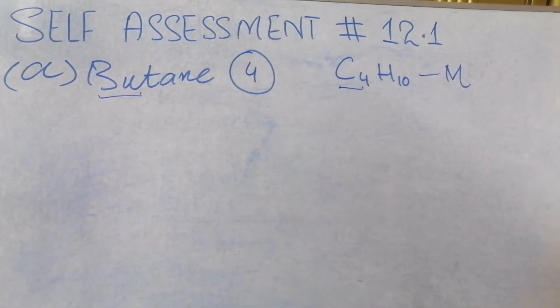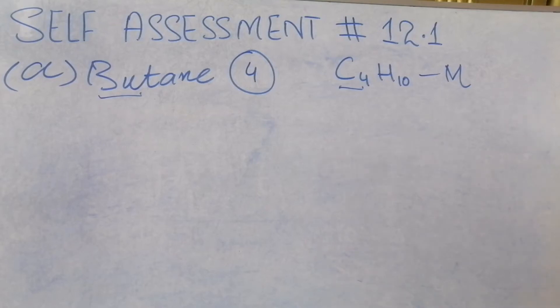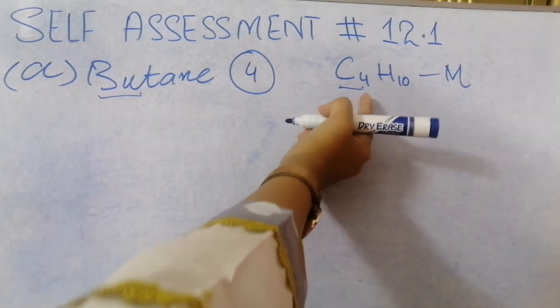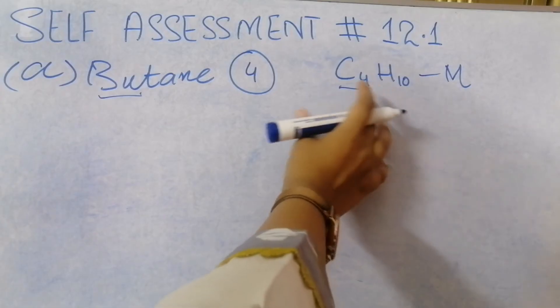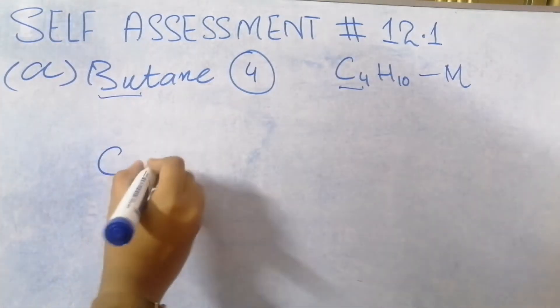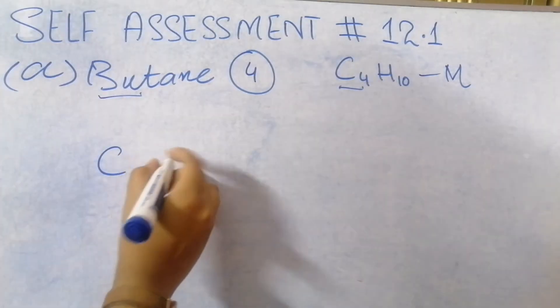Now we have to make the structural formula. It's the most easy way — first keep the molecular formula in your brain. Now you have 4 carbon atoms.